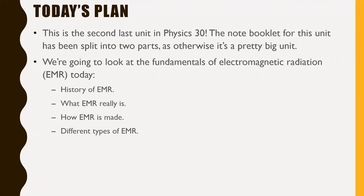Electromagnetic radiation is basically just a very fancy way of saying light — there's more to it than that, but light is more or less how we can summarize it. Today we're going to talk about the history of EMR, what EMR really is, how EMR is made, and different types of EMR. There won't really be any calculations today, so I'm going to try to whip through this as fast as possible.